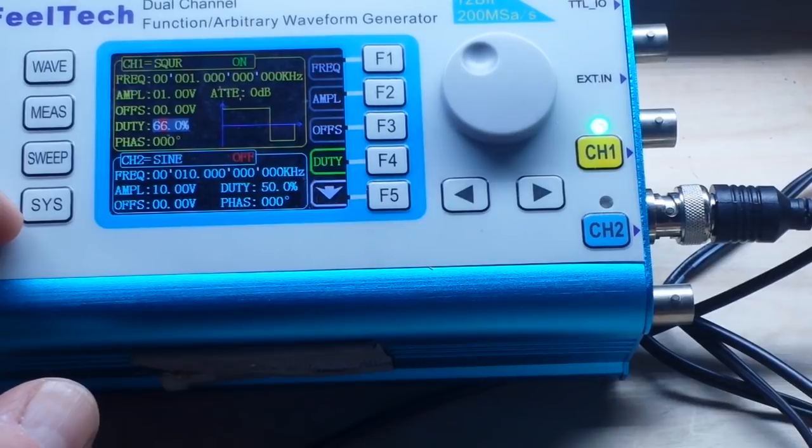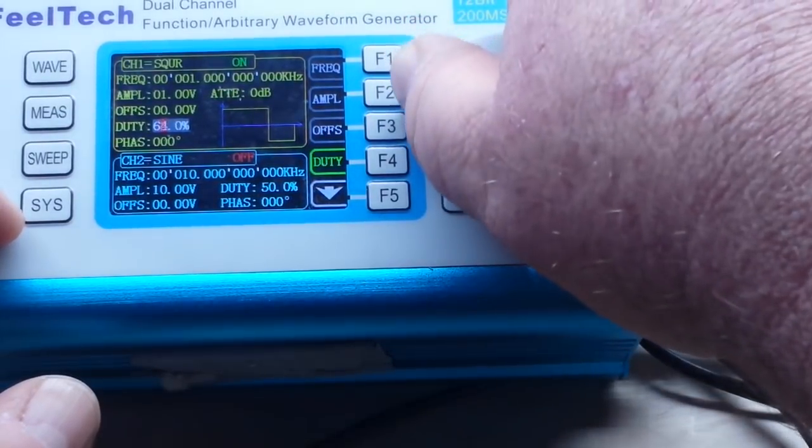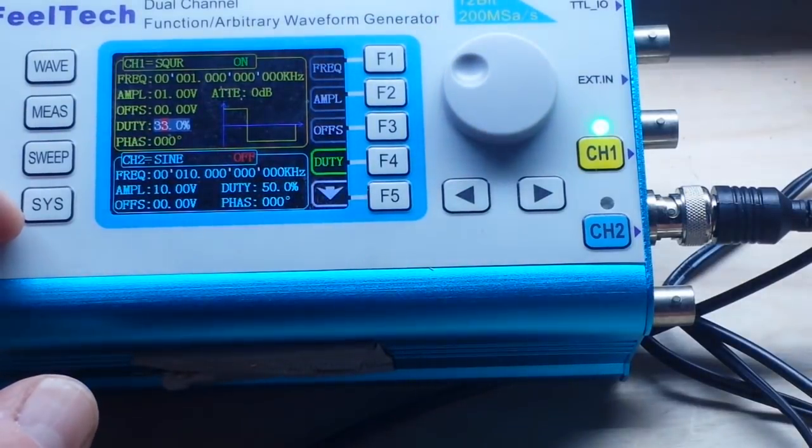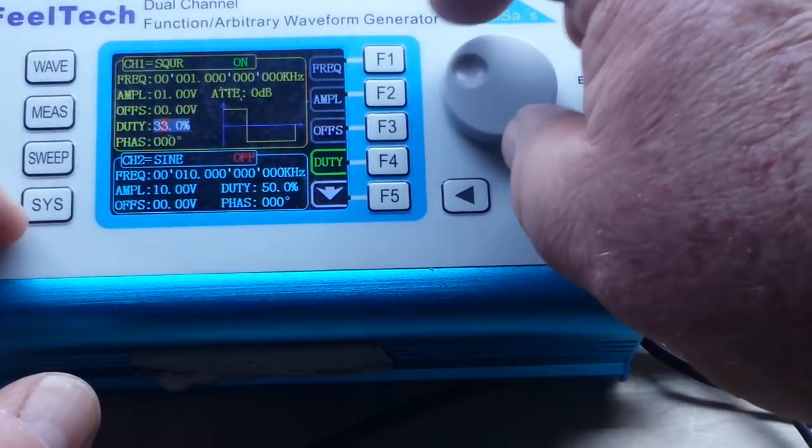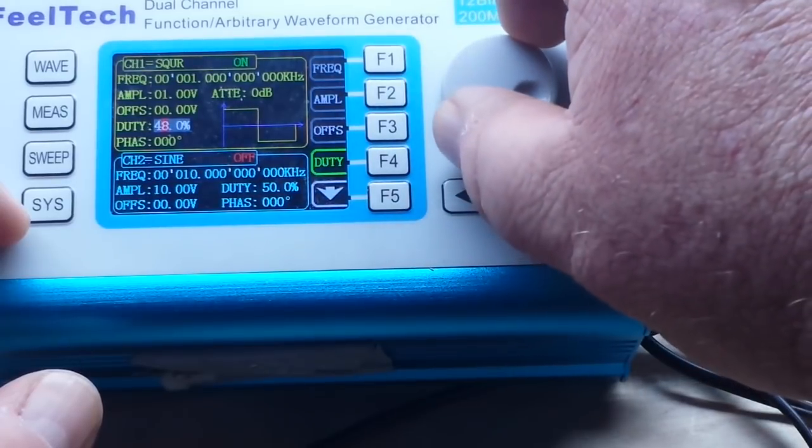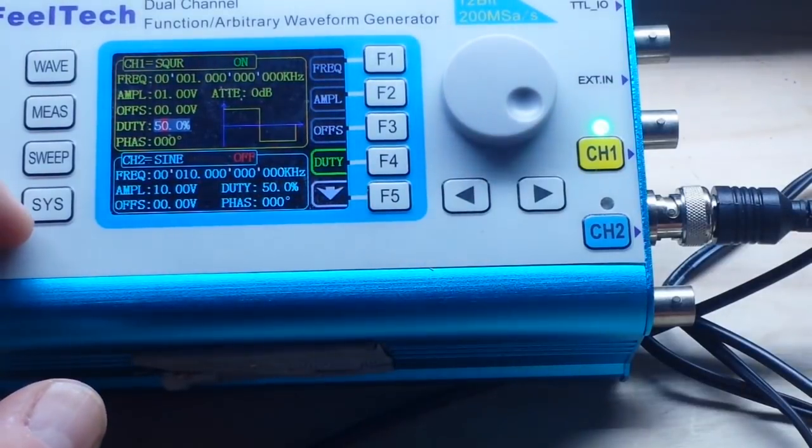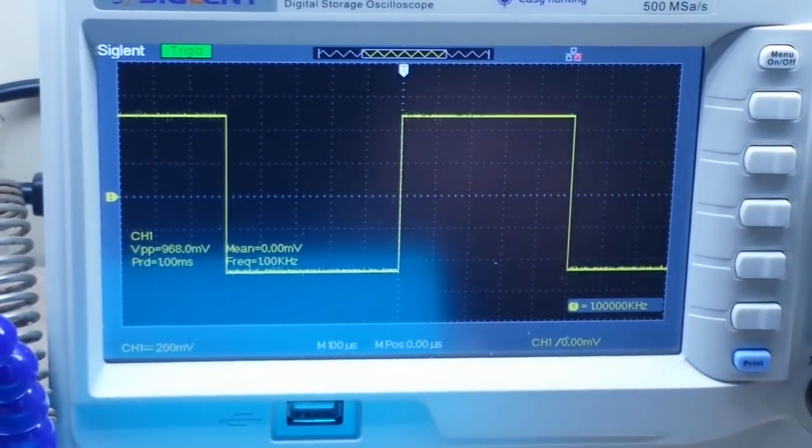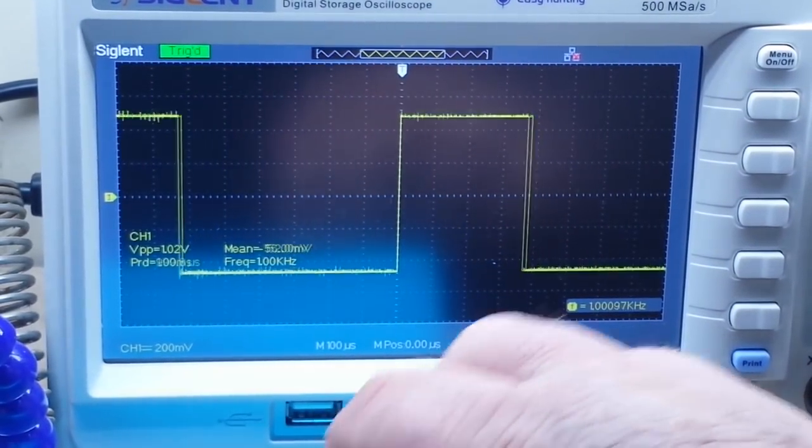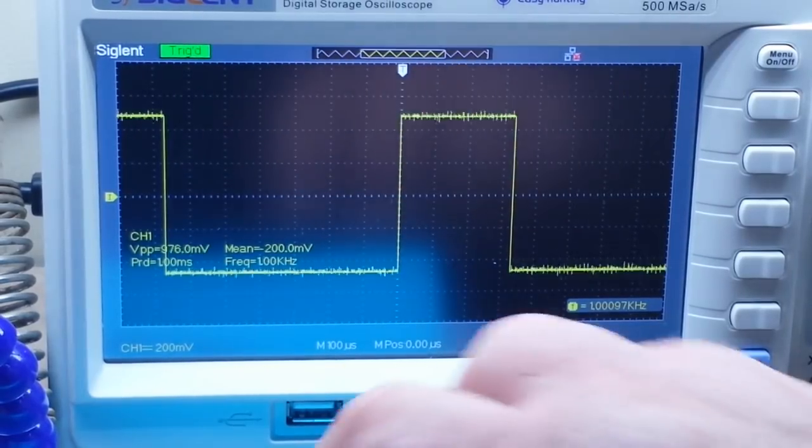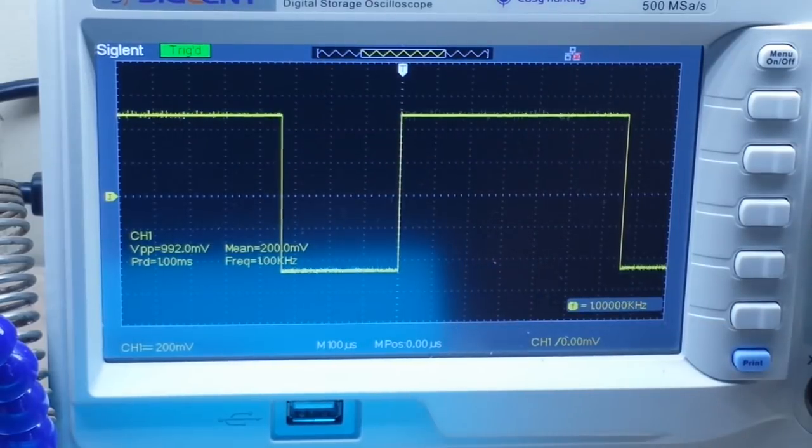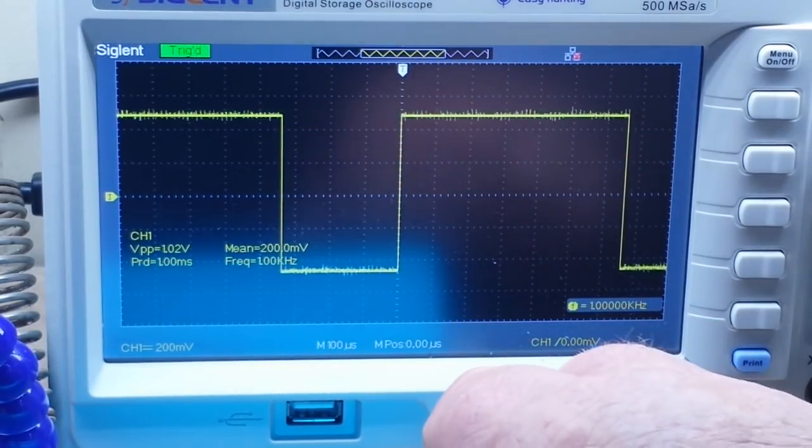There it is at 66%, two-thirds on, one-third off. There it is two-thirds off, one-third on. And there it is at 50% on, half on, half off. Let's, you can see the wave there, we'll go down to one-third on, two-thirds off.